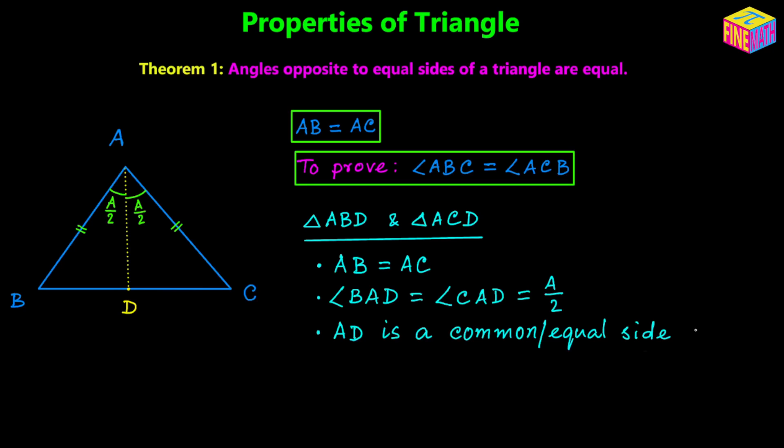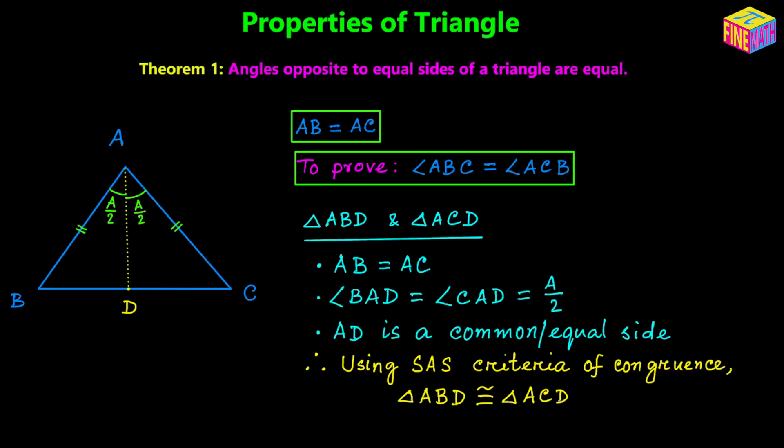So we have: side AB equals AC, angle BAD equals angle CAD, and AD is a common side. We can clearly use the SAS criteria of congruence to prove that these two triangles are congruent. Using SAS, triangle ABD is congruent to triangle ACD.